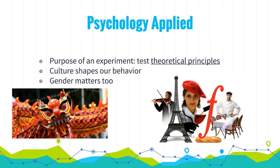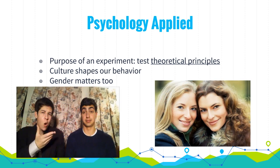Psychology applied: the purpose of an experiment is to test theoretical principles. Psychologists care most about discovering general principles that explain behaviors, emphasizing the general over the unique. Culture shapes behavior — such as our tendency to be casual or formal or our conversational distance. Gender also shapes behavior; for example, men are more likely to talk about information and advice, while women are more likely to carry on conversation to build relationships.